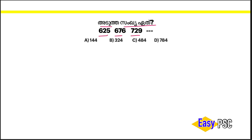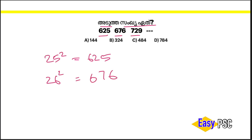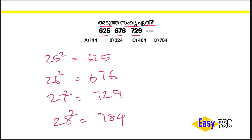This is where the model is. This is 25 square, that is 6025. The 2nd square is 6076, the 2nd square is 702, the 2nd square is 702.